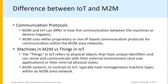M2M systems, as compared to IoT, typically have homogeneous machine types within an M2M area network. In IoT, the things refer to physical objects which have unique identifiers and the capacity to sense and communicate with their external environment, user applications, or their internal physical states.